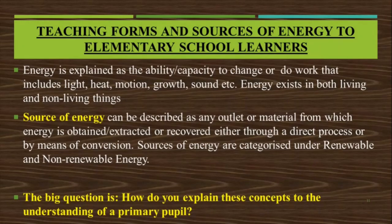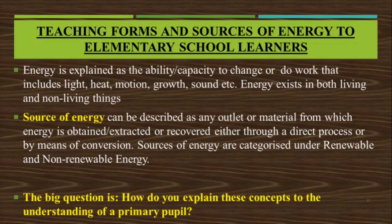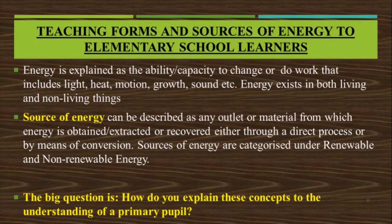The main theme for today is teaching forms and sources of energy to elementary school learners. Having already discussed the definition of energy and sources of energy, you can begin by defining energy to your students. Let them do an activity — for example, let one student switch on the lights in the classroom, or let students run outside, then ask questions about the activity. For sources, mention things around you such as firewood and batteries. You can categorize sources into renewable and non-renewable, depending on the level of students you are teaching.